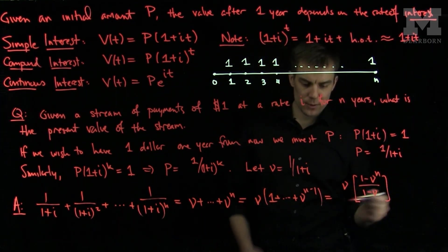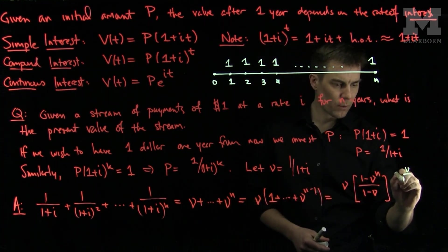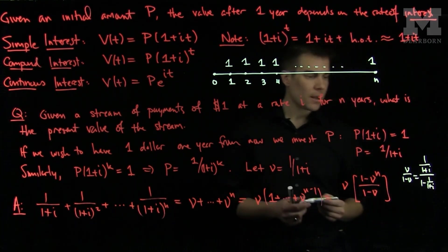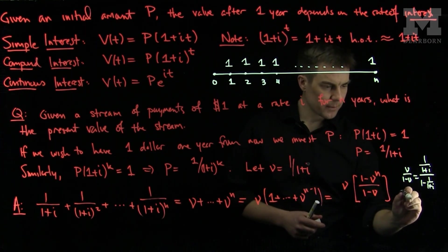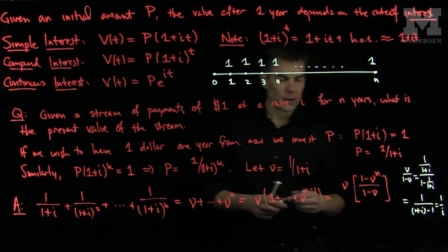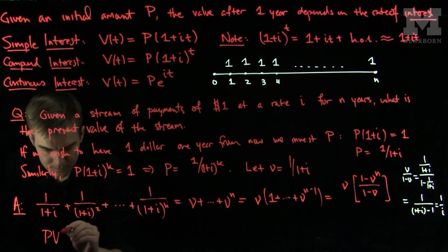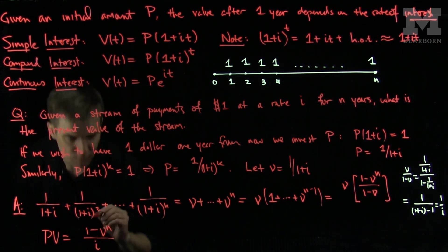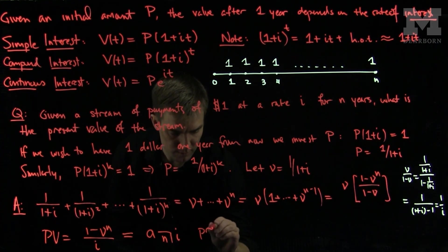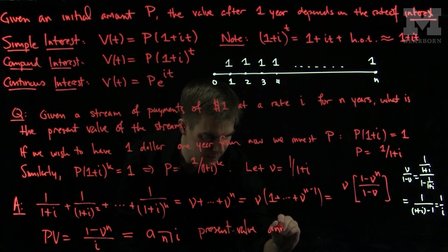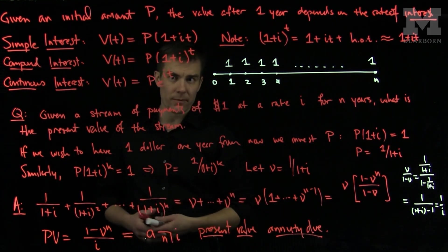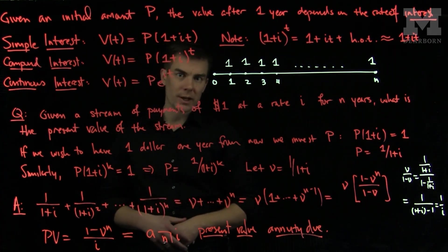Now we can simplify this. We observe that nu over 1 minus nu is 1 over 1 plus i, divided by 1 minus 1 over 1 plus i. Multiplying the top and bottom by 1 plus i, this simplifies to 1 over 1 plus i minus 1, or just 1 over i. So the present value is 1 minus nu to the n over i. This is written as a-angle-n at i, and that's called the present value of an annuity due. Whenever we do computations like this, we'll always try to exploit geometric sum formulas, so it's important to review that formula. Thank you very much.